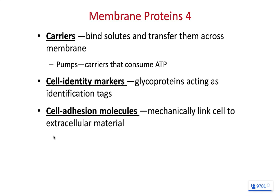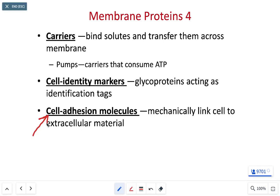Carrier proteins attract a solute — some kind of chemical dissolved in solution — and help it get across the membrane. Usually these carrier proteins move solutes against their concentration gradient, concentrating a chemical inside or outside the cell. Because carrier proteins are moving something against a concentration gradient, they require the input of chemical energy — ATP. Cell identity markers are typically extracellular proteins with carbohydrates attached that identify what kind of cell we're working with. Cell adhesion proteins anchor or bind one cell to the next in tissue; the two most common anchoring proteins are collagen and laminin.